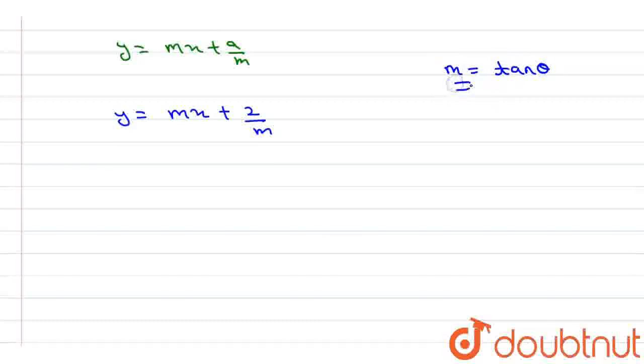Basically slope equal to tan theta, we know that. So we can write as y equals to tan theta x, tan theta x plus 2 by tan theta.